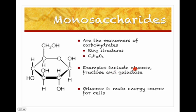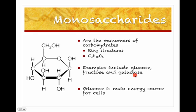Glucose is the main energy source for your cells, and it's the most common monosaccharide found in polysaccharides and disaccharides. Fructose is common because it's the sugar found in fruit, which is where it gets its name. And galactose you find in milk — it has that 'lactose' connection in the name.